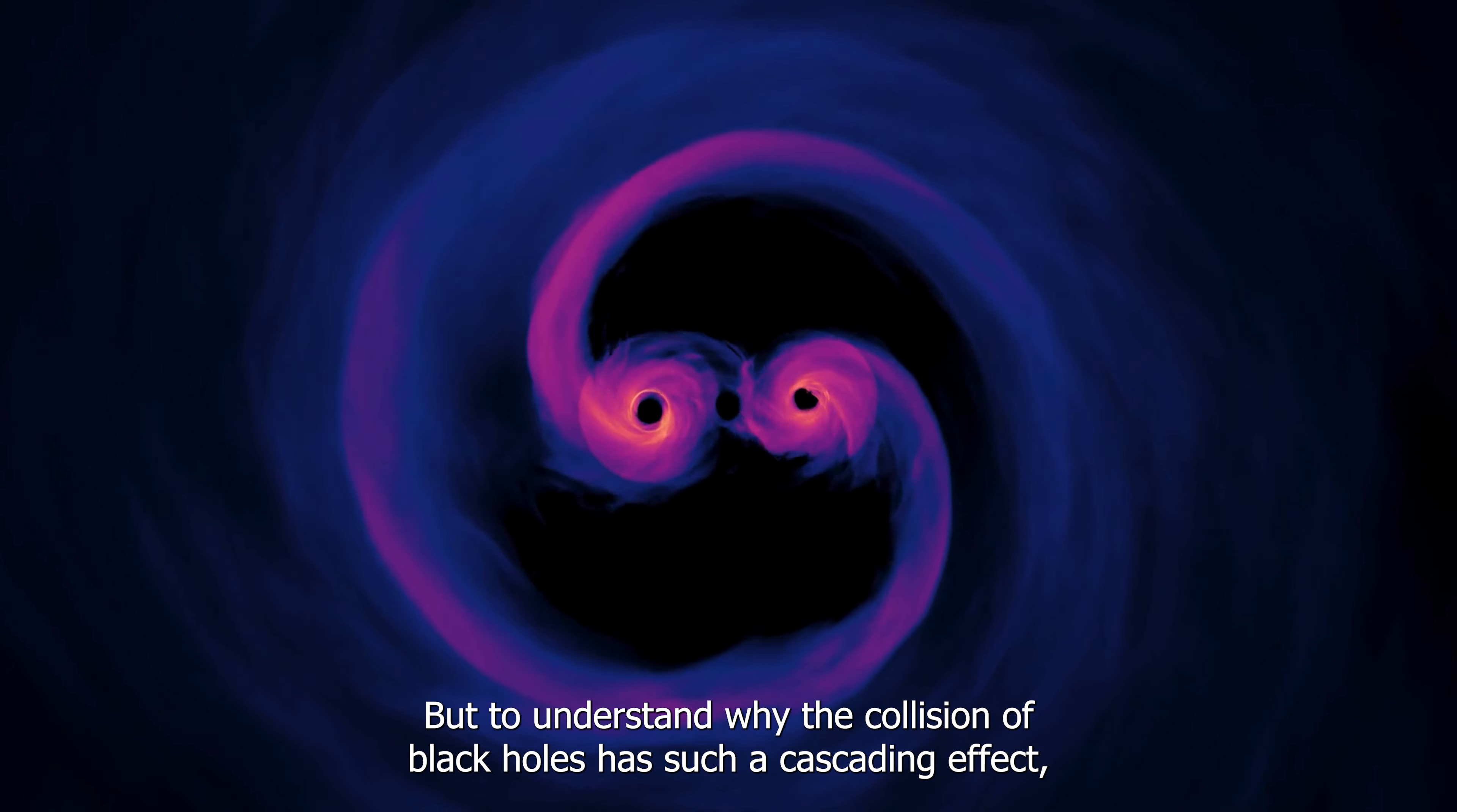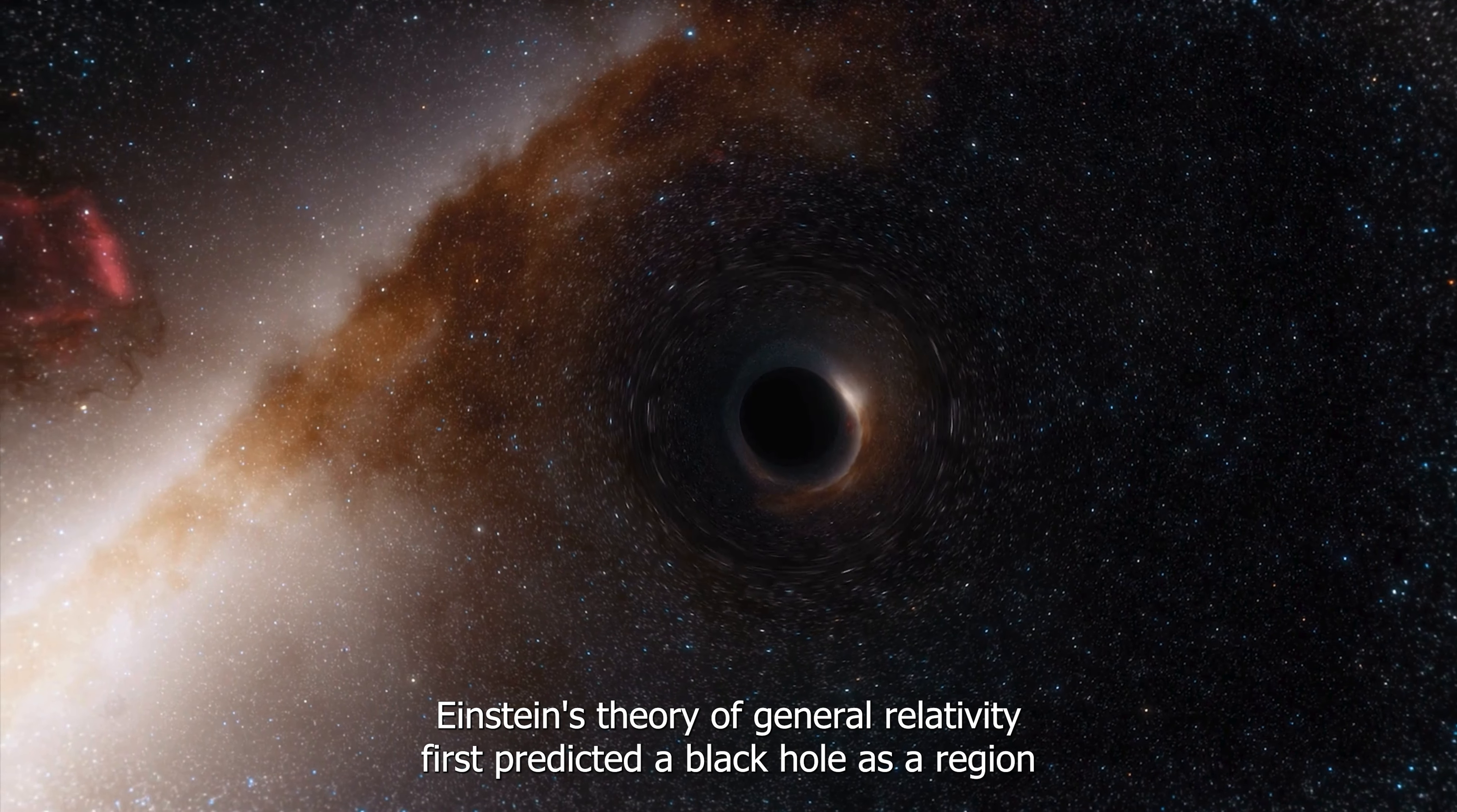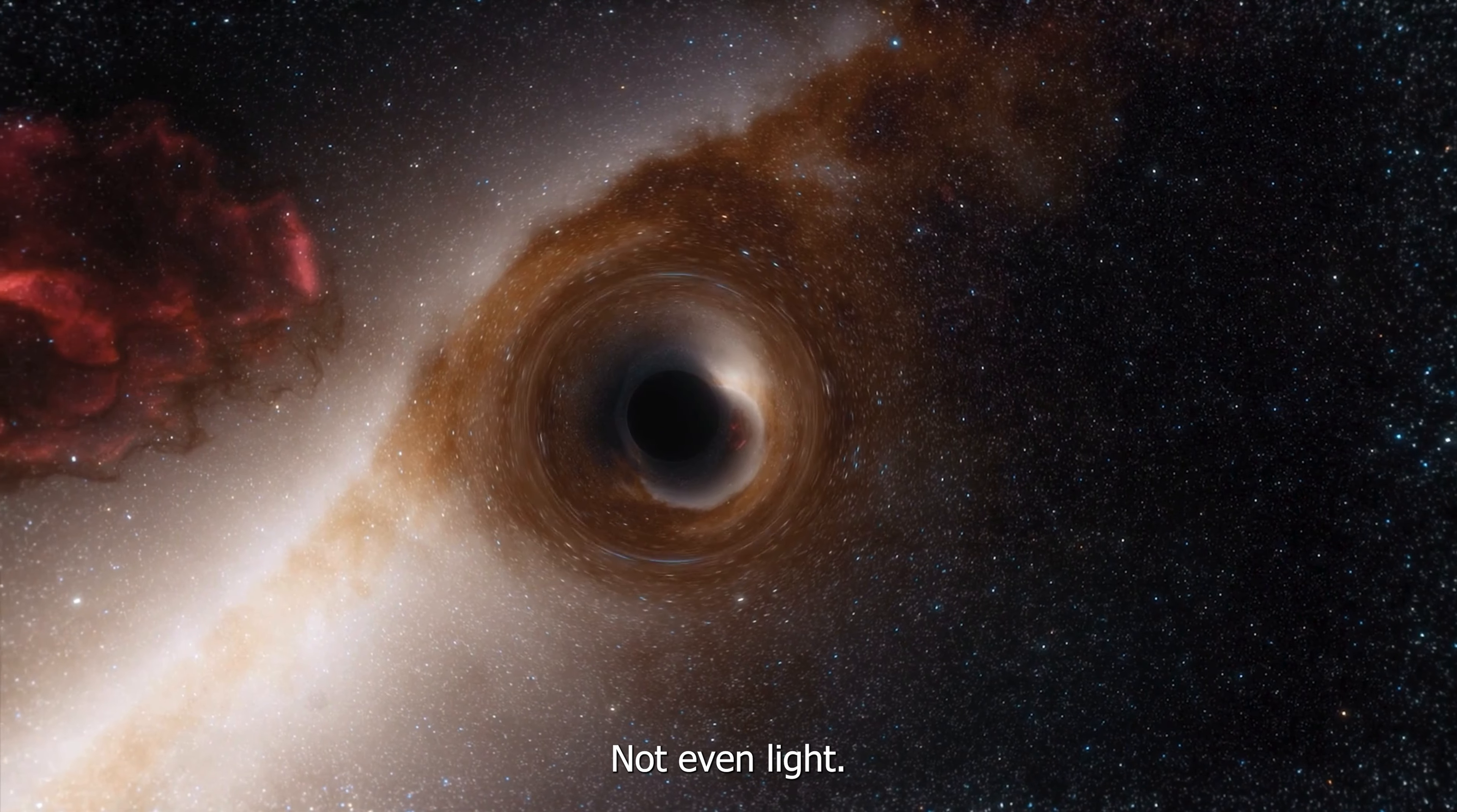But to understand why the collision of black holes has such a cascading effect, we have to take a step back and redefine what a black hole actually is. Einstein's theory of general relativity first predicted a black hole as a region of space-time where gravity is so strong that nothing can escape from within, not even light.